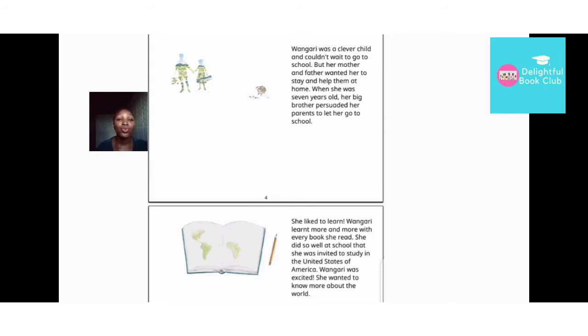Wangari was a clever child and couldn't wait to go to school. But her mother and father wanted her to stay and help them at home. When she was seven years old, her big brother persuaded her parents to let her go to school.